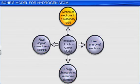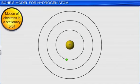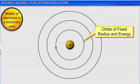The first postulate states that the electron in the hydrogen atom can move around the nucleus in circular paths of fixed radius and energy called orbits.